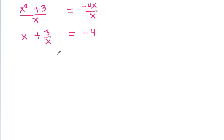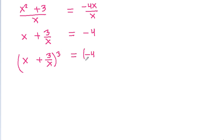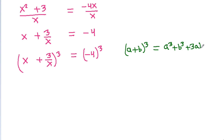If we cube both sides, then (x - 3/x)³ = (-4)³. Using the identity (a - b)³ = a³ - b³ - 3ab(a - b).